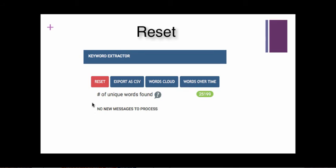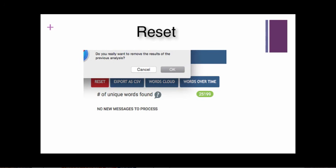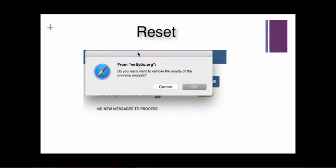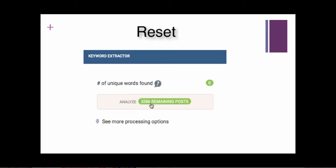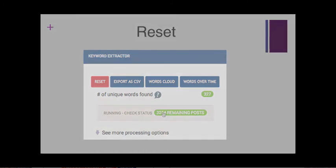You can use the reset button to bring your dataset back to its original state. This does not mean you are deleting the data collected — you are only undoing any removal of words done up until this point. For instance, earlier we removed the words Toronto, Dundas, and Dundas Square from our word cloud. By clicking reset, those words will return to the visualizations because we are returning the dataset back to its original state. Please note that after you reset, you will need to reanalyze in order to create the visualizations.